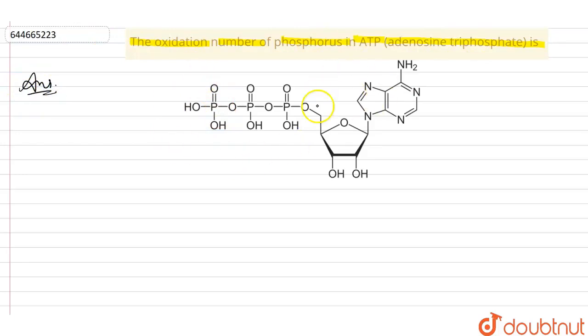So this is the structure we are seeing now, the structure of ATP, that is adenosine triphosphate. ATP is an organic compound that provides energy to drive many processes in living cells such as muscle contraction, nerve impulse propagation, etc.